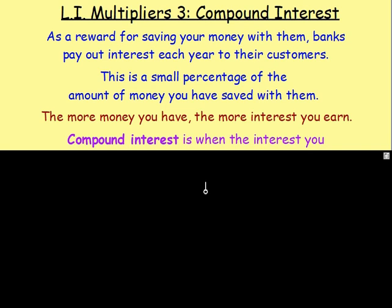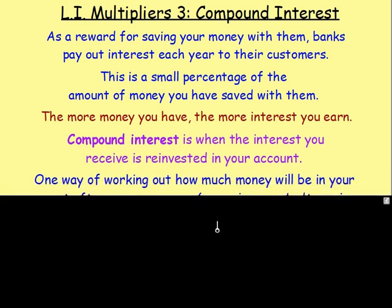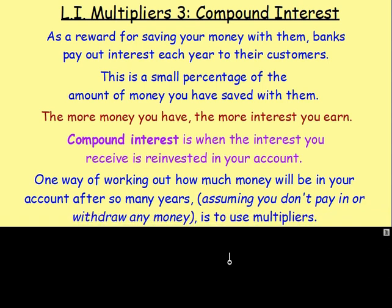What is compound interest, though? Well, compound interest is when at the end of the year — or the end of the month, it changes for different banks — when they give you that interest, they pay it back into the account. So the amount of money in your account keeps on increasing. That interest that you receive is reinvested. One way of working out how much money will be in your account after so many years is to use multipliers. However, this only works if you do not add any money to the account or take any money from it.